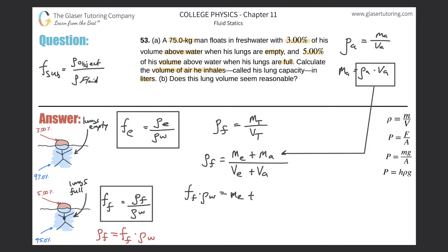The density of air should be memorized — or you'll be given it. I would memorize it as 1.29 kg/m³. We do know that value, so now we can plug the density of air times volume of air into the mass-of-air term in our equation.